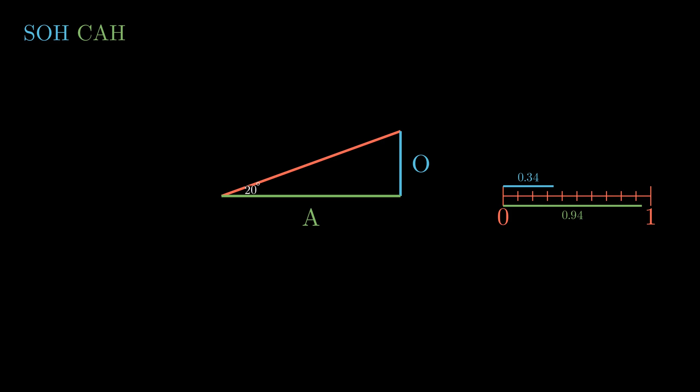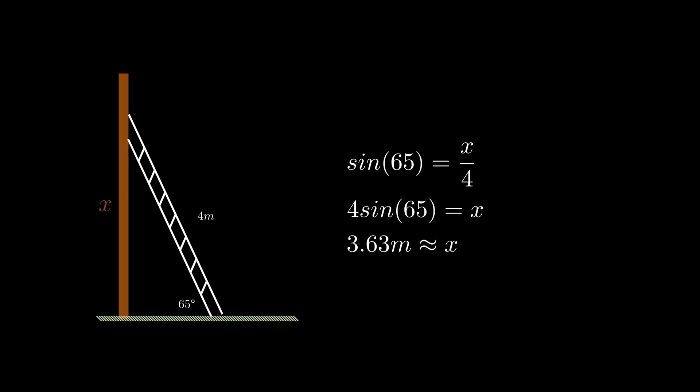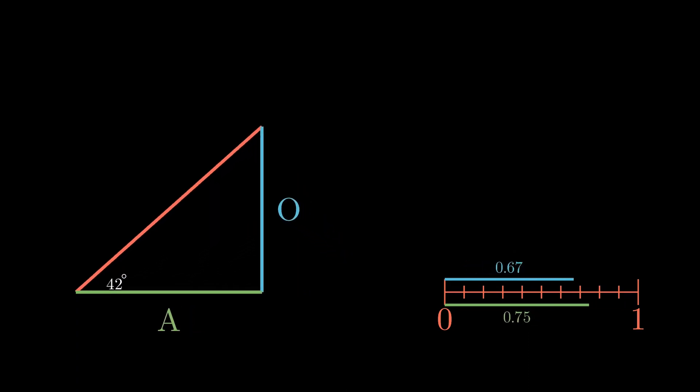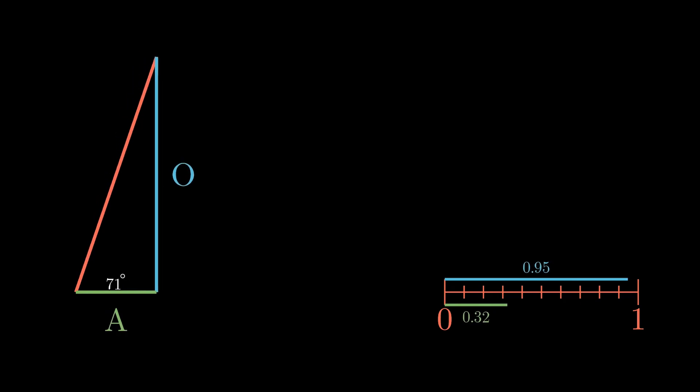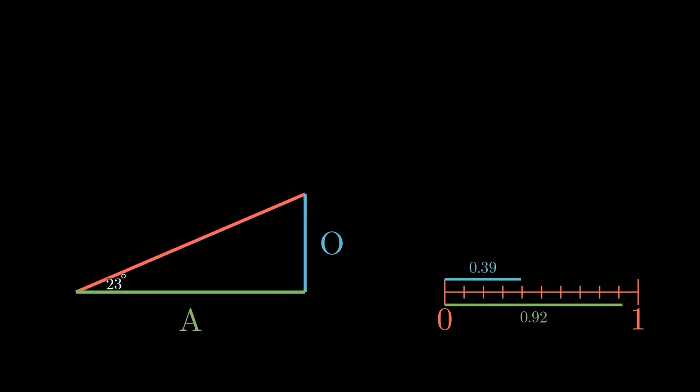And this logic applies the exact way to our initial problem, the 4m long ladder. If we pull up our solution again, what we have is 4 times sine of 65 equals x. Knowing that sine of 65 is 0.91, what this equation is really saying is, since the opposite side is 91% of the length of the hypotenuse, then let's just calculate 91% of 4m.